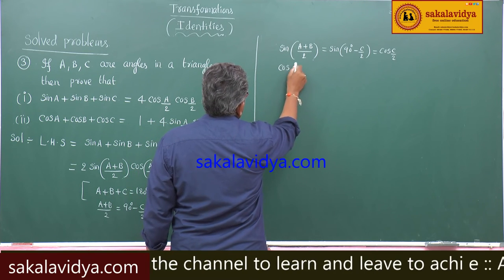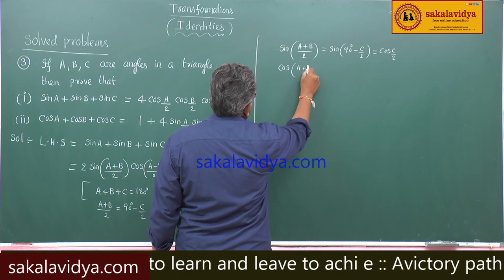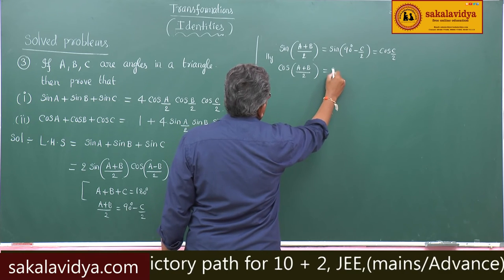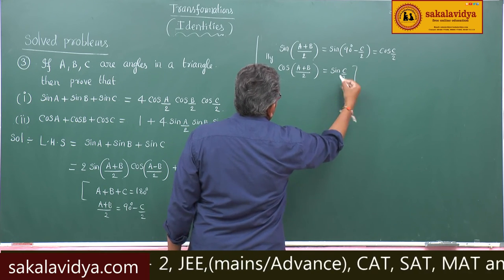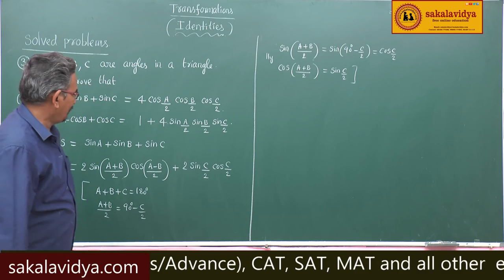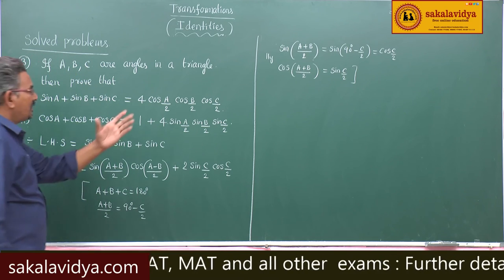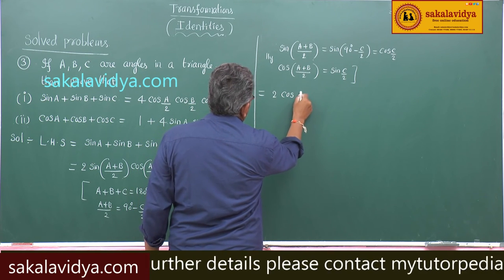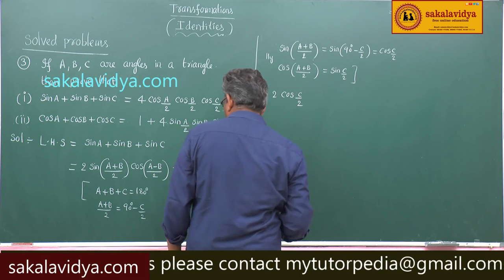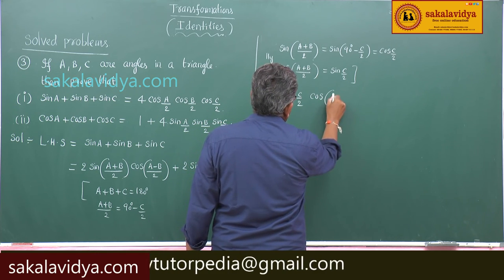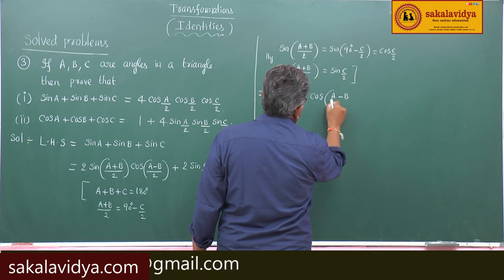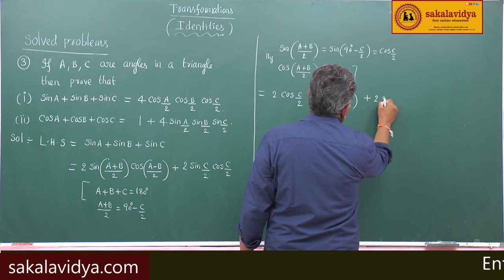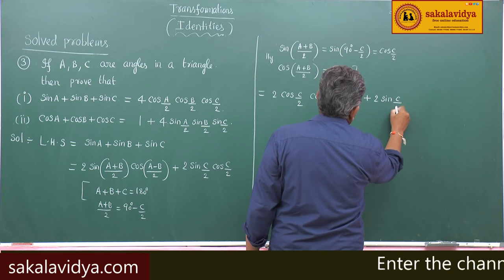Similarly, cos(C/2) = sin((A+B)/2), and cos((A+B)/2) becomes sin(C/2). So sin((A+B)/2) is replaced by cos(C/2), giving 2cos(C/2)·cos((A−B)/2) plus 2sin(C/2)·cos(C/2).